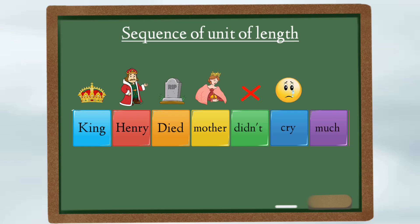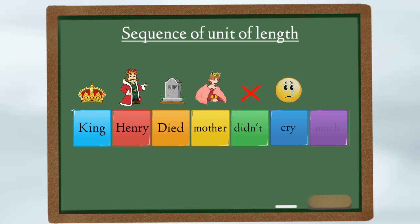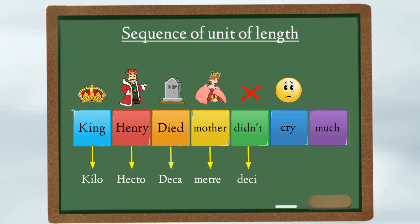Here the letter K stands for kilo, H stands for hecto, capital letter D stands for deca, M stands for meter, small letter D stands for deci, C stands for centi, and lastly M stands for milli.